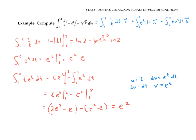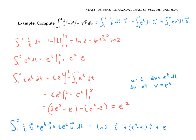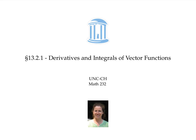Finally, we can put all this together to get our answer, which is ln two times i plus (e squared minus e) times j plus e squared times k. In this video, we saw that we could take the derivative of a vector valued function by taking the derivatives of each component separately. Similarly, the integral of a vector valued function is the vector we get by taking the integral of each component separately.